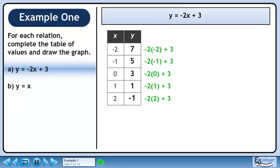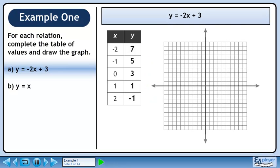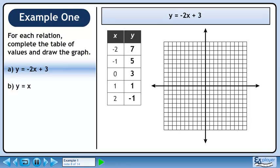If we multiply 2 by negative 2 and then add 3, we get negative 1. Now we'll graph the relation. Plot the points and draw the line.